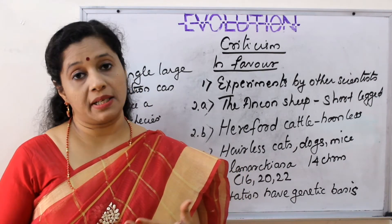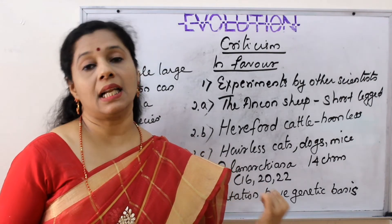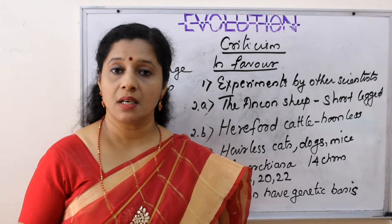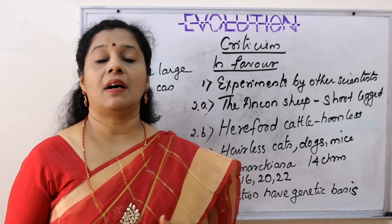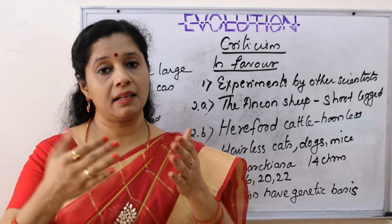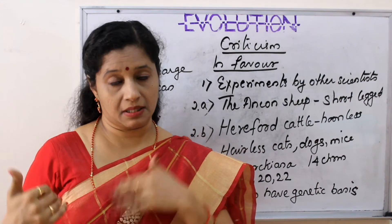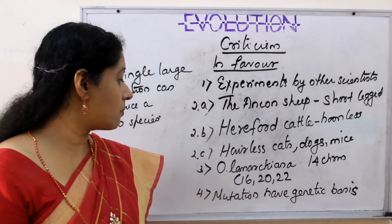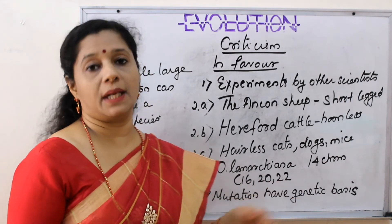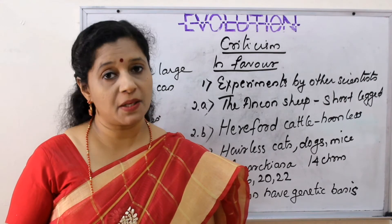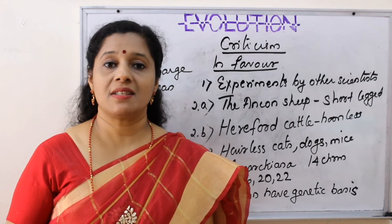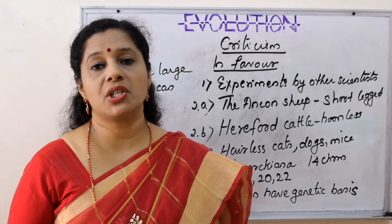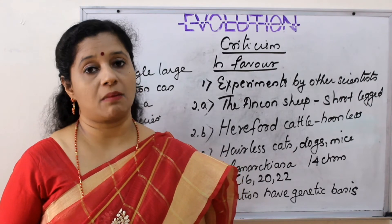Oenothera lamarckiana, the plant in which Hugo de Vries conducted his experiment, had a chromosome number of 14. When he did self-pollination he found a group of offspring entirely different from the parents, and again when he conducted self-pollination they were different from their parents. When he checked their chromosome numbers, they were different - 16, 20, 22. Since chromosome number is fixed for a particular species, if the chromosome number is changing, the species is also changing. Additionally, a single large mutation called saltation can lead to formation of a new species.